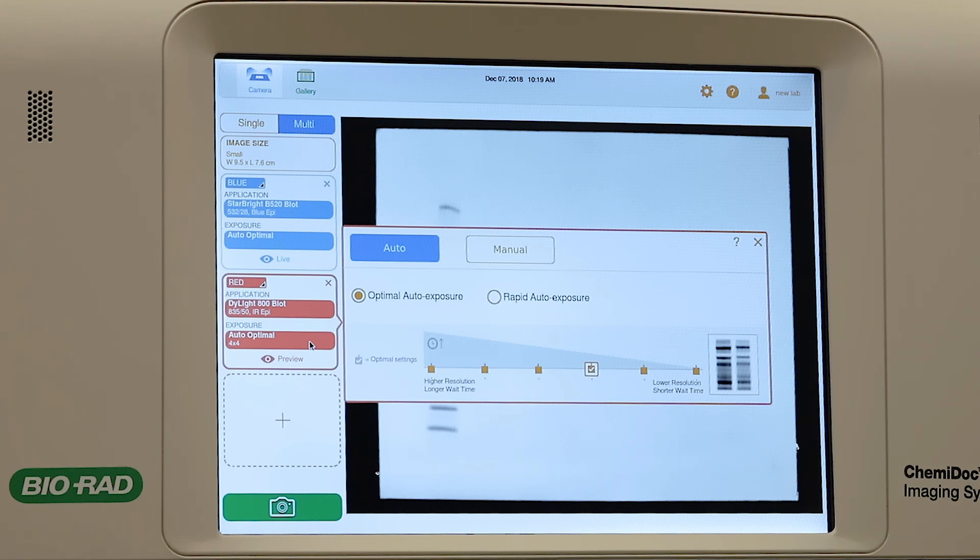To accommodate low-light quantitative assays, such as near-infrared dyes, additional options are available in the Exposure menu. The ChemiDoc will provide a recommended binning setting for each image, but user control is enabled to adjust from 1x1 to 8x8 binning.